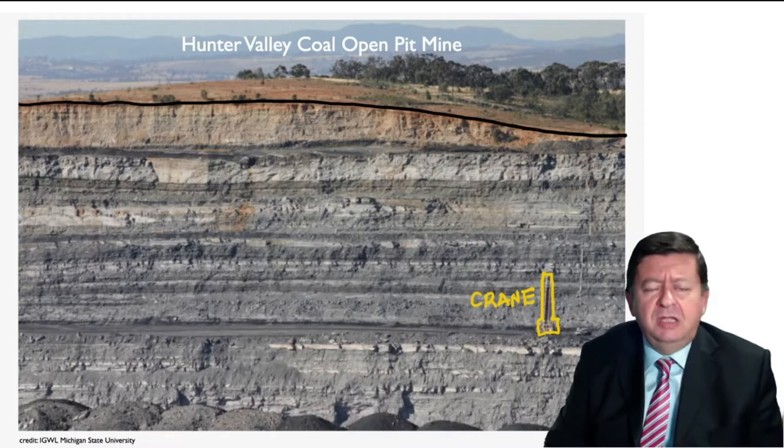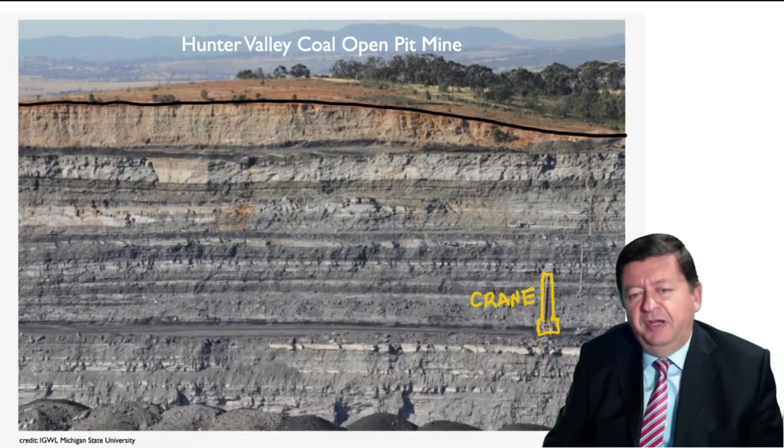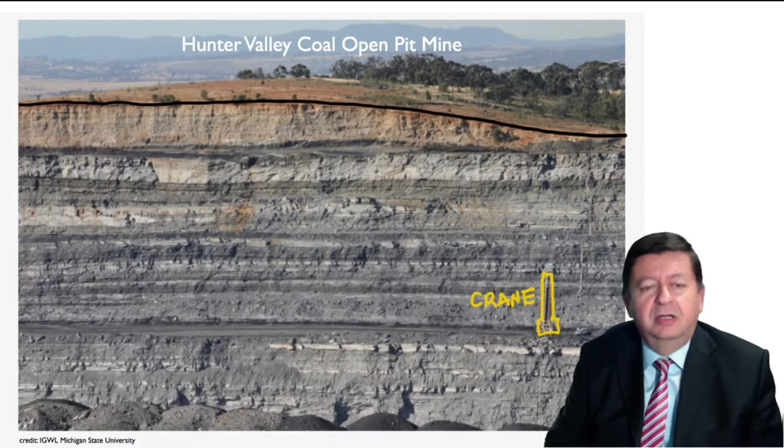In this case, this is the Hunter Valley coal open pit mine — it's a picture taken there. For reference, there is a crane here that may be 10 meters in height; you can also see the trees on the ground. So this section could be maybe 100 meters in thickness. And here we can actually see what the underground looks like, what is beneath the surface.